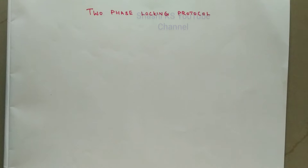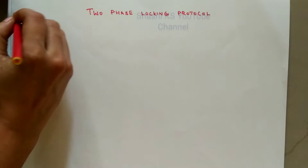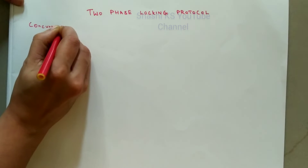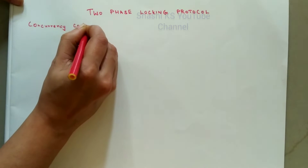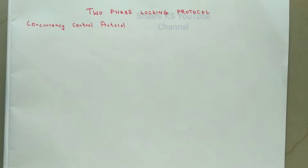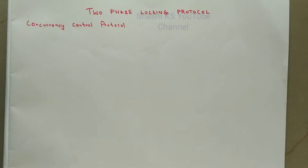Hi everyone, welcome to the channel. In this video we will learn about the two-phase locking protocol, which is also called as the 2PL protocol. This 2PL protocol is basically a concurrency control protocol which is used to prevent concurrent transactions from interfering with one another using the concept of locks. Before learning about the two-phase locking protocol, let's learn about some basic concepts associated with this protocol.